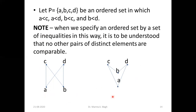We can also draw the Hasse diagram in a different shape. In the alternative diagram, the same four inequalities are satisfied: a < c, a < d, b < c, b < d. It is up to you whether you make the diagram in one shape or another — that is why we say the same ordered set can have different diagrams.